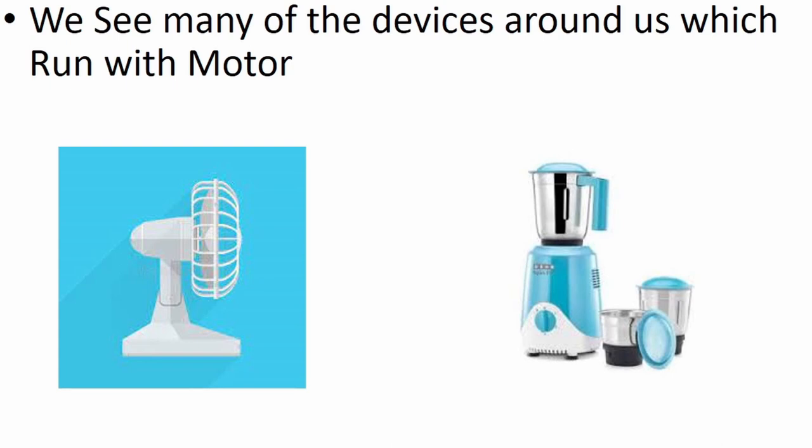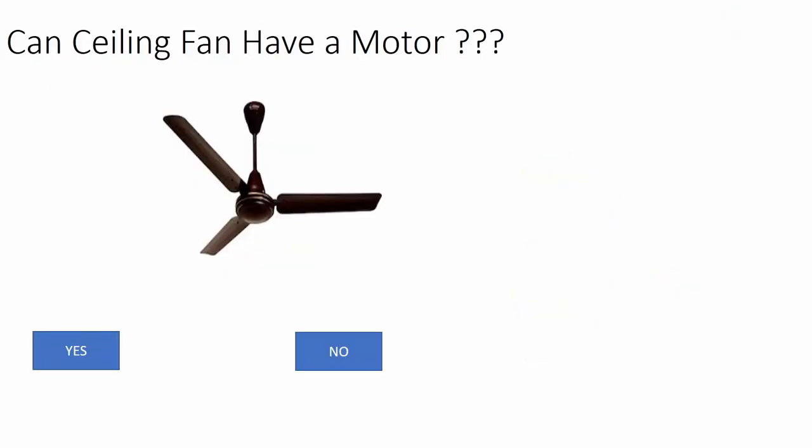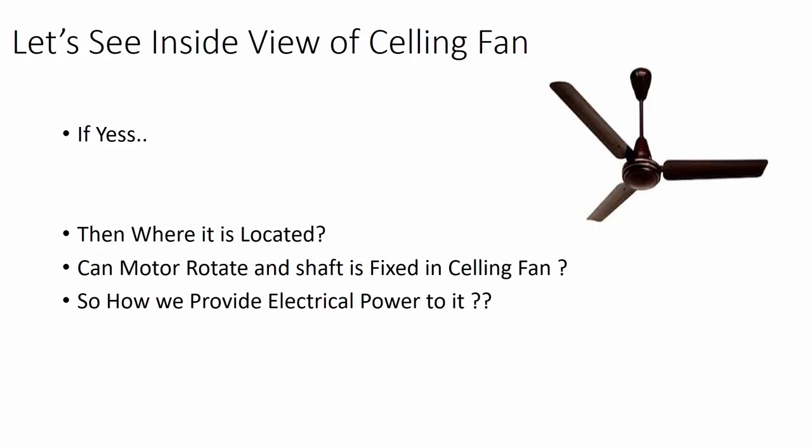Now there is a motor in the ceiling fan. Have you ever seen the motor inside the ceiling fan? If your answer is yes, then where is it located? If you can see the body of the ceiling fan, it rotates with the whole blade. This means that the rotating part and the stationary part are also rotating.